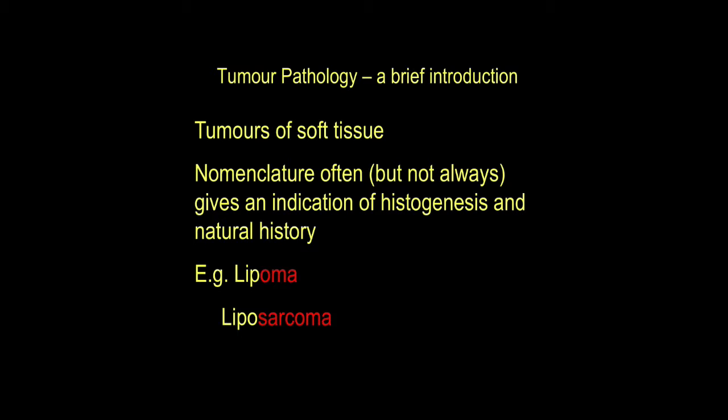Now let's turn our attention to tumours of soft tissue derived from the embryonic mesoderm. The nomenclature here has some general rules. First, let's introduce the term sarcoma. Just as carcinoma is a malignant tumour of epithelial origin, sarcoma is a malignant tumour of connective tissue origin. We can often use a prefix to indicate what particular soft tissue we're dealing with. For fat: a lipoma — ending in -oma — is benign; a liposarcoma is a malignant tumour of fat connective tissue origin.